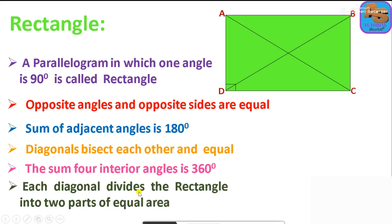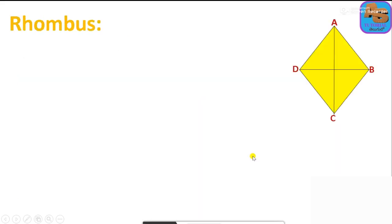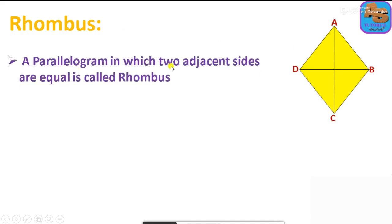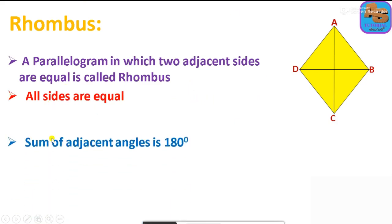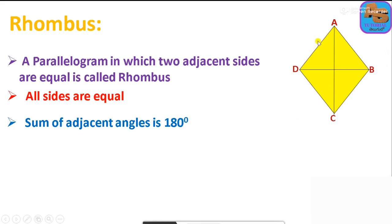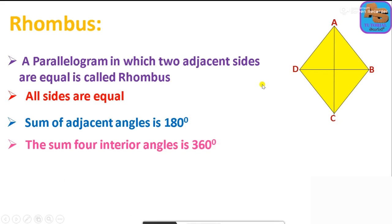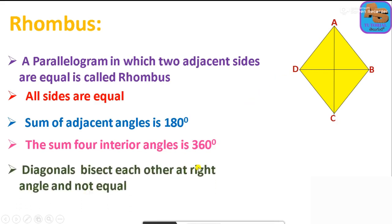Each diagonal divides the rectangle into two parts of equal area. Next is rhombus. A rhombus is a parallelogram in which all sides are equal. The sum of the adjacent angles is 180 degrees, and the sum of the four interior angles is 360 degrees. The diagonals bisect each other at right angles, but they are not equal.